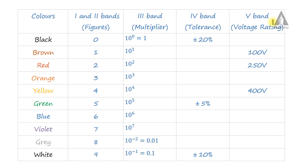The fifth band is the voltage rating. We have three voltage ratings available: 100V, 250V, and 400V. Brown represents 100V, red represents 250V, and yellow represents 400V.